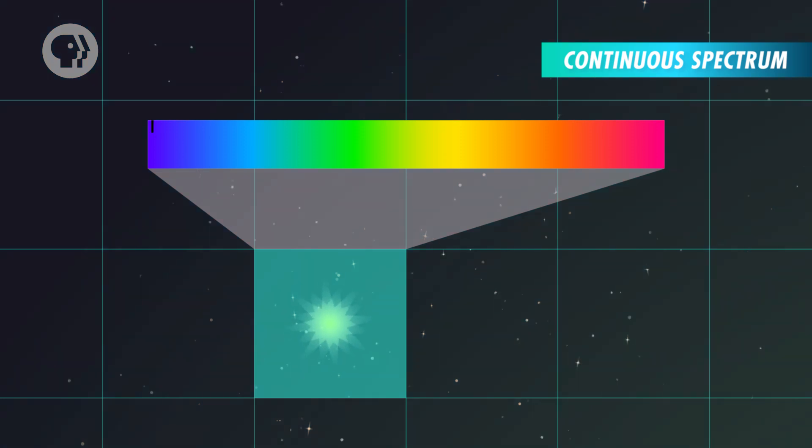The sun emits a continuous spectrum, but some elements in its atmosphere absorb some of the light. Hydrogen atoms, for example, absorb light emitted by other masses of heated hydrogen. But you don't always need special equipment to see and study continuous spectra.